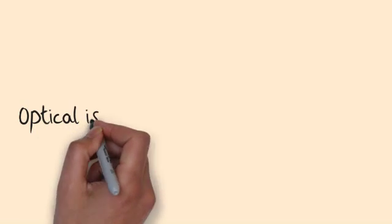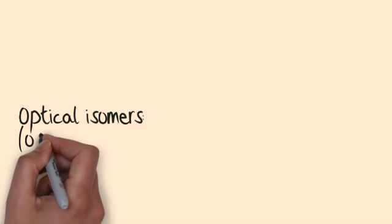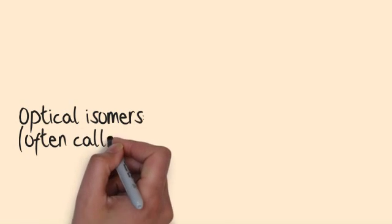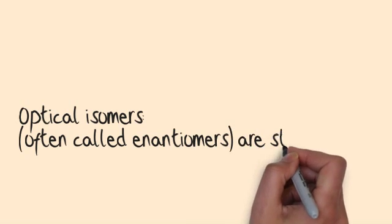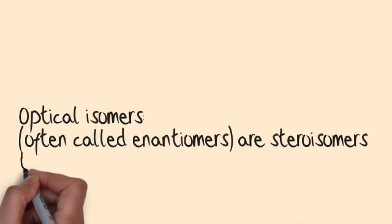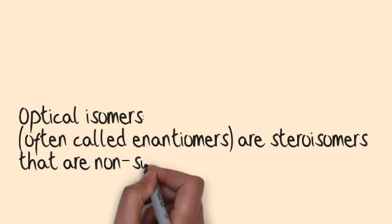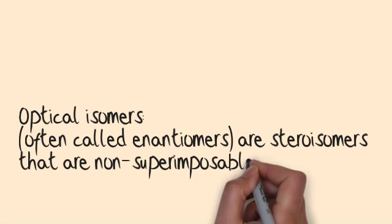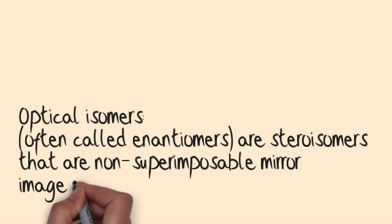Optical isomers, often called enantiomers, are stereoisomers that are non-superimposable mirror images of each other.